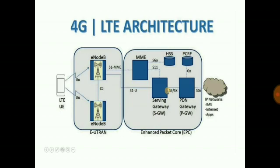Two logical interfaces are used in the LTE network: user plane and control plane. In the user plane, the application creates data packets that are processed by protocols such as TCP and UDP. Whereas in the control plane, it carries the network signaling messages.